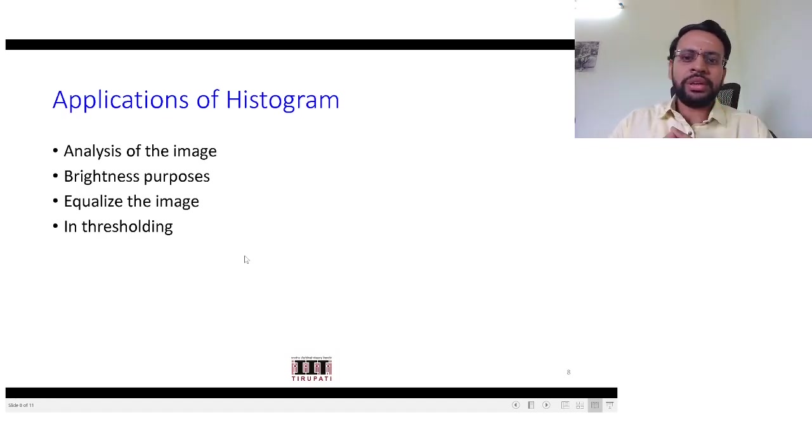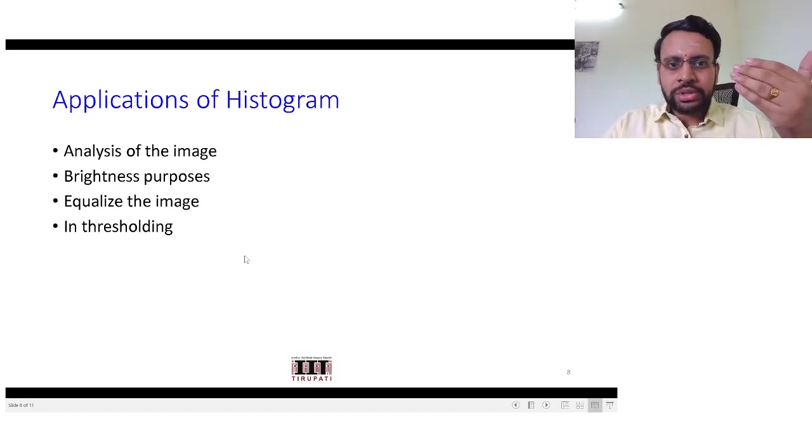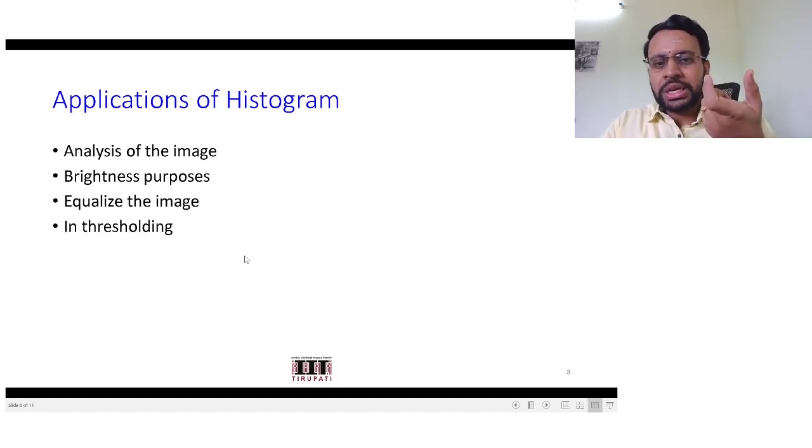The other applications being image equalization, we will come to that in the next class, and also we would extend that discussion in the class after that. Another application could be you could use it in thresholding. In the last class we already had some discussion about what it means by thresholding. Suppose you want to get your object of interest. Assume the cases where your object of interest is having a distinct distribution of intensities separate from the rest of the image. In such cases, in order to get your object of interest either segmented or in order to enhance that, you could use histogram information.